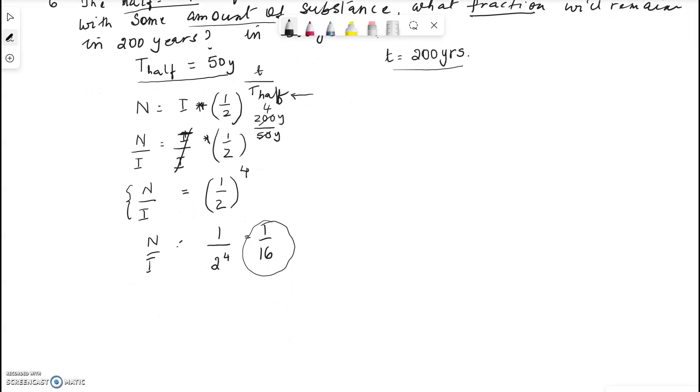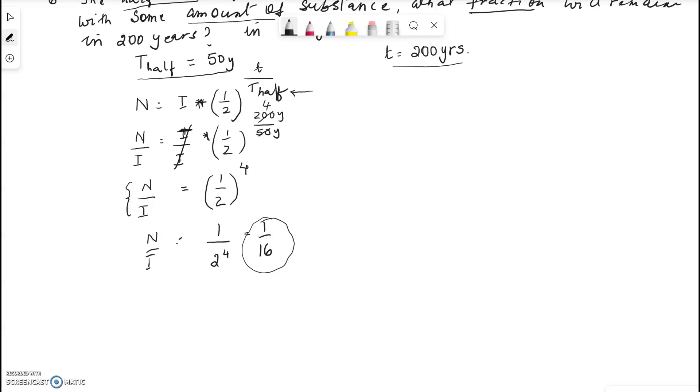And the next question is, how much of it is left in 300 years? We do the same process. So t half we know is 50 years. Now the time that has gone by is slightly more. So that is 300 years. And we're going to use the same formula. N over I is equal to half to the power of t over t half. Since we're talking about half-life, it's t half. And that's why this is half.